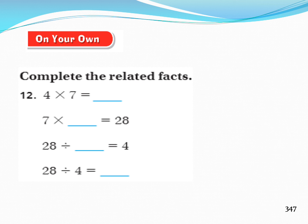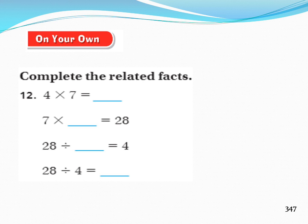Now please go to page 347 on your own. Complete the related facts. Question 12 — try to solve this equation by yourself. Are you ready? Let's solve it together: 4 multiplied by 7 equals 28, 7 multiplied by 4 equals 28, 28 divided by 7 equals 4, and 28 divided by 4 equals 7.